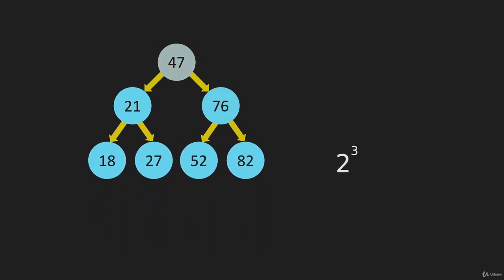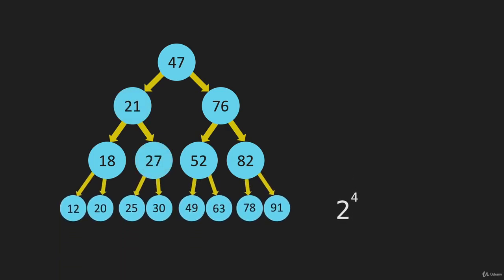So if we're going to find something in this tree with just one node, it would take one step. If we're going to find something in this tree, let's say we're going to find the number 76, it would take one, two steps. If we're going to find the number 27, it is 1, 2, 3 steps. And let's say the number 49, it's 1, 2, 3, 4 steps. And so on. So that's to find the item.